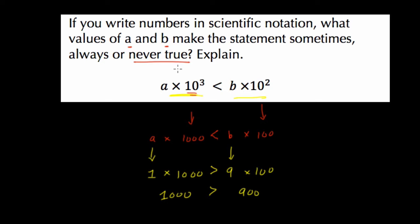This would also never be true if A and B were 0, because we have 0 times 1,000, right? Write that down over here. 0 times 1,000 versus 0 times 100. Well, what happens there? Well, that means they're equal, right? They would both equal 0. So the two ways to get these things never true is to use positive values for A and B or 0 for A and B.